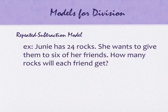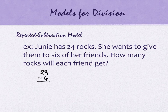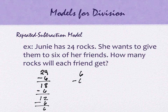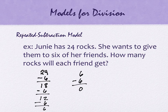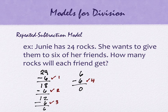Junie has 24 rocks and she wants to give them to six of her friends. When we do repeated subtraction, we envision 24 rocks sitting here, and we go through all six friends and give them each a rock. Once we've done that, we have six fewer rocks — we've subtracted off six. Now we have 18 left. We do it again, giving them all another six rocks, ending up with 12. We do it again to get six left, and this continues until there's none left or fewer than six remain. So I could have had 26 rocks divided by six and gotten a remainder of two. The number of times we subtracted is the answer — each friend got four rocks.